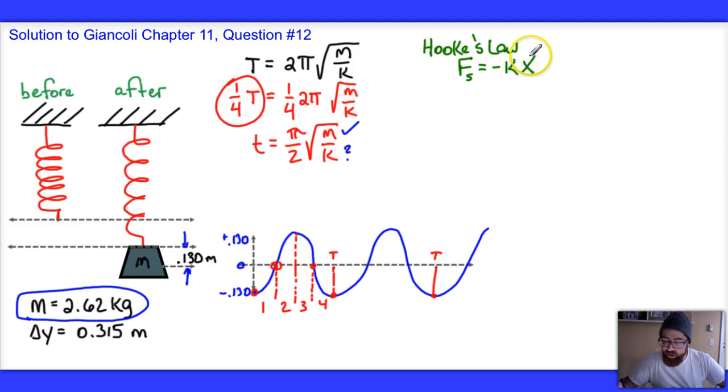This negative sign right here is just to remind you that the direction of the vector displacement must be opposite the direction of the restoring force. So, that means if you push down on the spring, the restoring force is trying to push back up. So, don't get confused by that negative sign. It's nothing fancy.